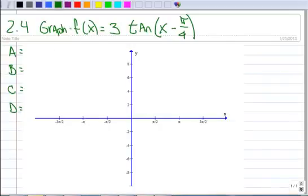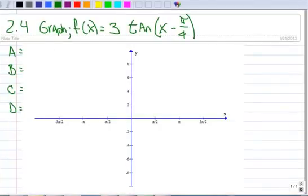All right, in this example, we want to graph f of x equals 3 times the tangent of x minus pi over 4. So step 1 is to identify our a, b, c, and d.